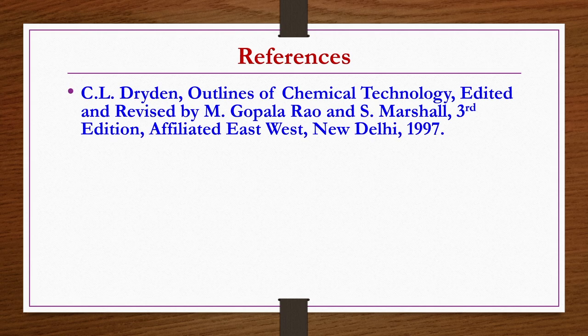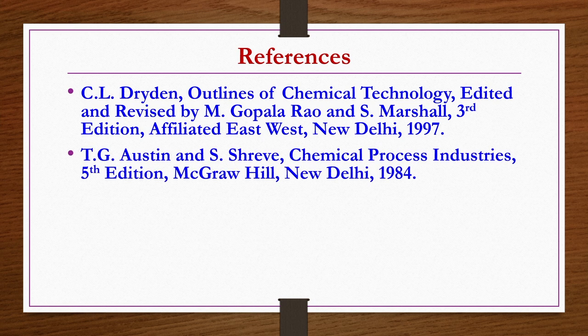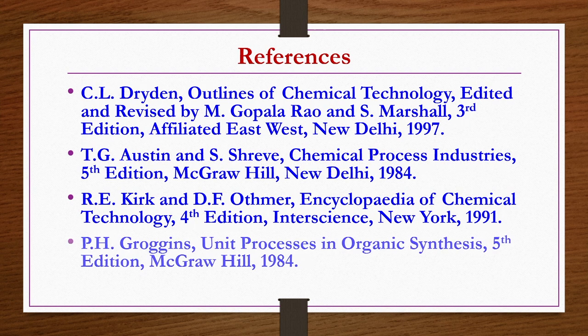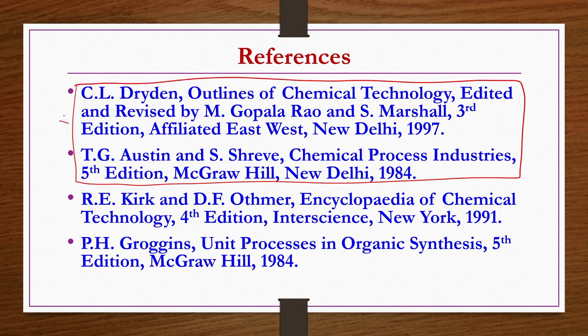References for fermentation industry lectures: Outlines of Chemical Technology by Dryden, edited and revised by Gopal Rao and Marshall, third edition; Chemical Process Industries by Austin and Shreev, fifth edition; Encyclopedia of Chemical Technology by Kirk and Othmer, fourth edition; Unit Processes in Organic Synthesis by Groggins, fifth edition. The first two books are sufficient for the entire fermentation industry lecture notes.